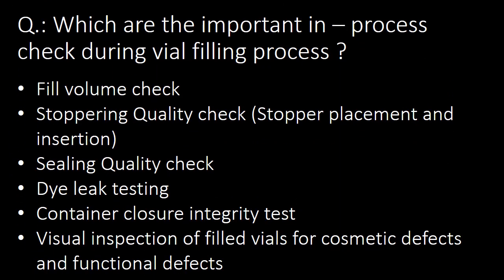Next question: which are the important in-process checks done during vial filling? The key in-process checks are fill volume check, stoppering quality check (including stoppering placement and insertion), sealing quality check, dye leak testing, container closure integrity test, and visual inspection of filled vials for cosmetic and functional defects.